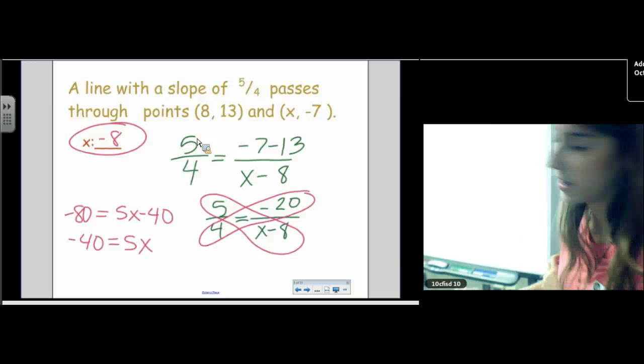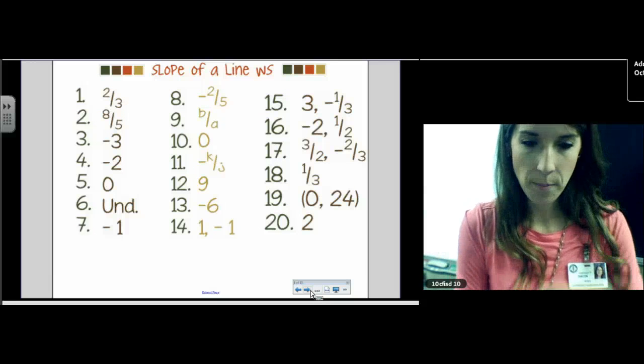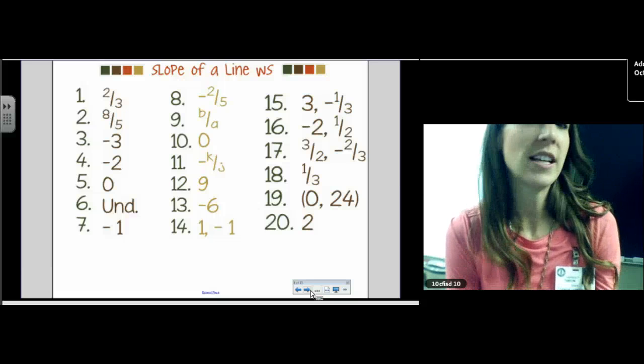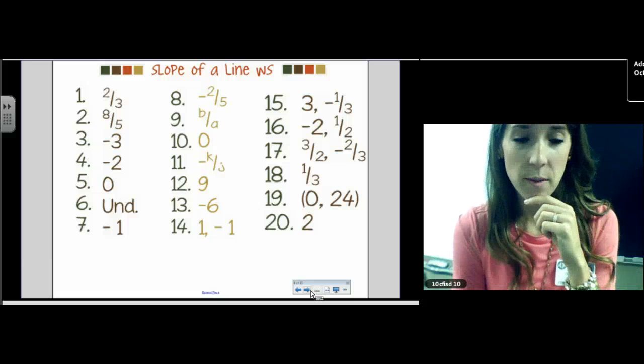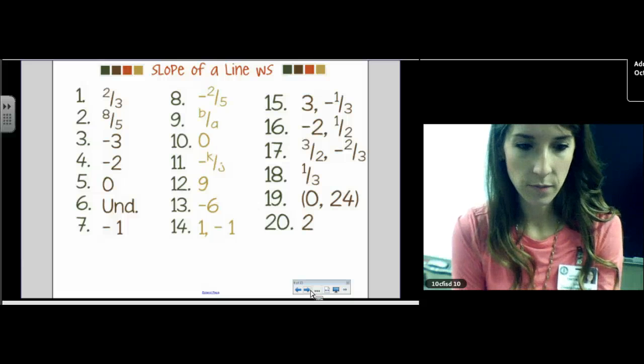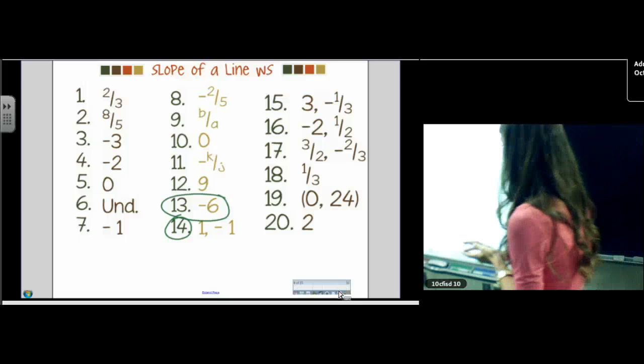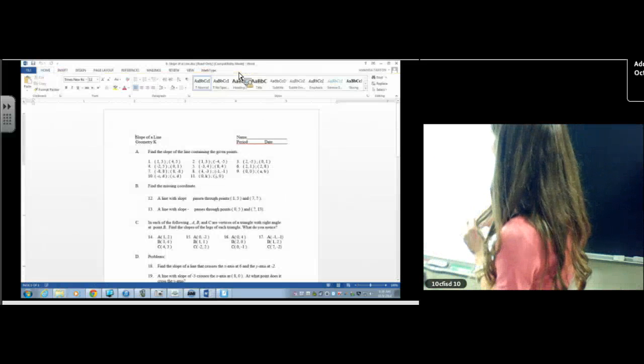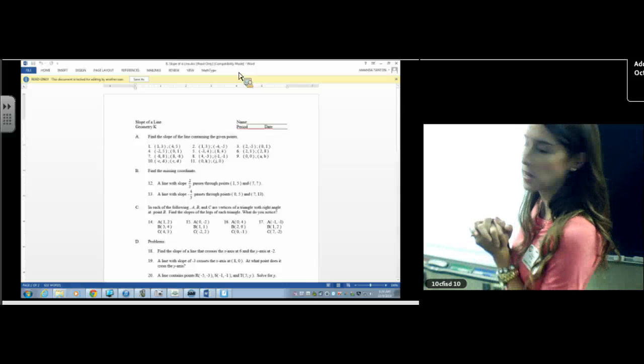Let's check our homework. Slope of a line worksheet. There were 20 problems. I hope you tried the stuff at the bottom. I hope you didn't get bored by the stuff at the top and go, oh, I'm done with this homework. Because there were a lot of slope problems, but there were some good problems at the bottom. So please ask me about them if you have questions. So we're going to start by working number 13. Enable editing. Number 13, find the missing coordinate. We just kind of did this a few minutes ago, but I'll do it again.